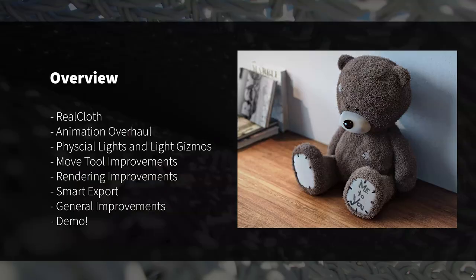Let's take a look at some of the new features and improvements we're going to cover in today's 'What's New' webinar. Real Cloth is back in KeyShot 10 with huge improvements to appearance and processing. We'll also talk about new animation improvements, updates to our physical lighting tools, the move tool, and finish up covering KeyShot 10's rendering improvements, smart exports, and a couple of general improvements.